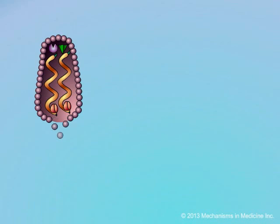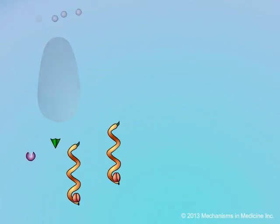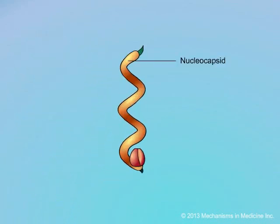The capsid then sheds its coat. The two viral RNA strands, which are coated, and the viral enzymes are then released into the cytoplasm.